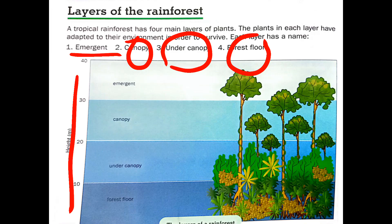Looking at the diagram, the forest floor covers 10 to 20 meters of height, the canopy covers 20 to 30 meters, and the emergent layer covers 30 to 40 meters.